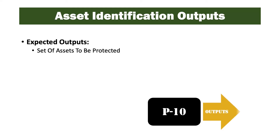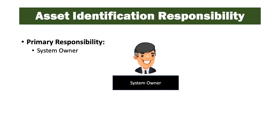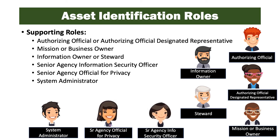Expected outputs are a set of assets to be protected. Primary responsibility is the system owner. Supporting roles include the authorizing official or authorizing official's designated representative, the mission or business owner, the information owner or steward, the senior agency information security officer, the senior agency official for privacy, and the system administrator.